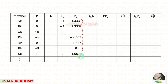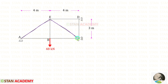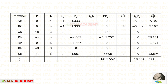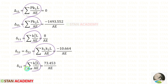The length of members AB, BC, and DE is 4 m; BD is 3 m; and for the diagonal member we apply the Pythagorean theorem: √(3² + 4²) = 5 m. We then compute the table columns P·k1·L, P·k2·L, k1²·L, k1·k2·L, and k2²·L, and find their summations. Using these, we calculate delta 1L, delta 11, delta 12, delta 21, and delta 22.